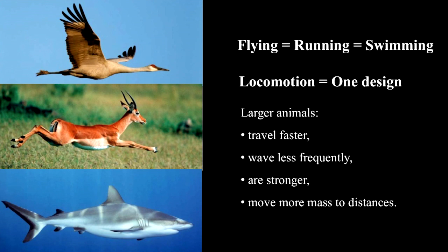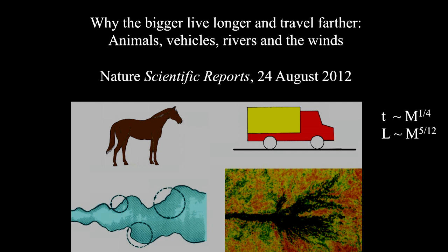The prediction is basically familiar to everyone: larger animals should travel faster, should wave their bodies less frequently, should be stronger as weight lifters, and should move mass to greater distances over time. I used the same idea — the Constructal Law — to solve an old puzzle in biology: why bigger animals have longer lifespans. Not just the animals, but all the things that move — the atmospheric and oceanic currents, the river deltas and river basins, and all of us, the trucks and the truck drivers.